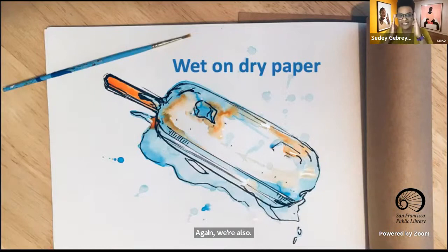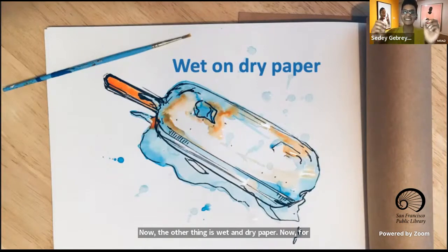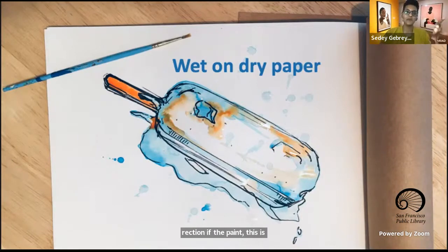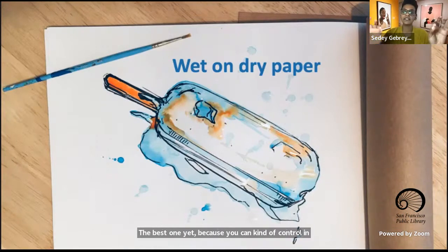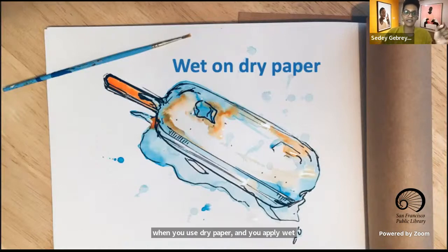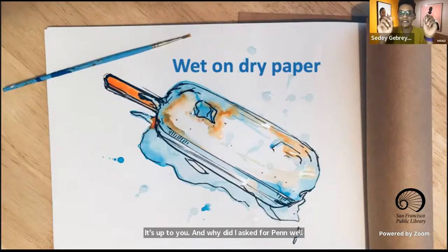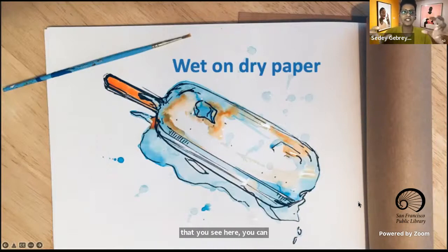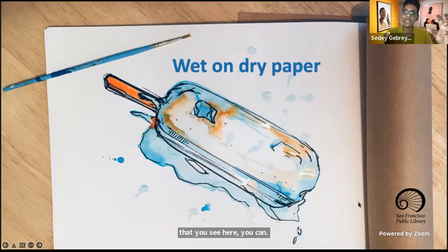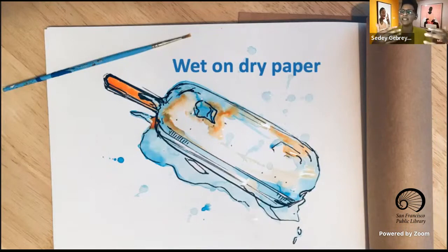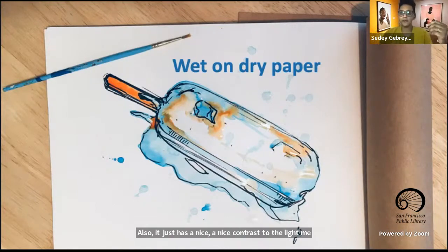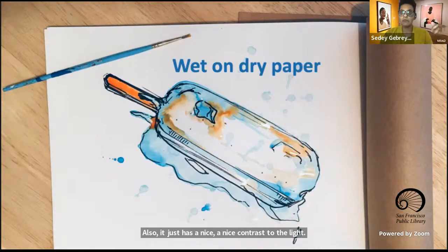Now, the other thing is wet on dry paper. Now, for those of us who'd like to control the direction of the paint, this is the best one yet, because you can kind of control and darken the color. The color tends to be dark and dense when you use dry paper and you apply wet paint. And we'll look at that as well. It's up to you. And why did I ask for pen? Well, the pen will give us the effect that you see here. You can highlight some parts, you can guide, even if you press a little bit harder on your pen, you can guide the water. Also, it just has a nice contrast to the lightness of watercolor. Watercolor by nature is kind of light, but not really.